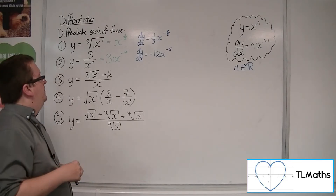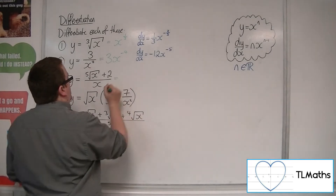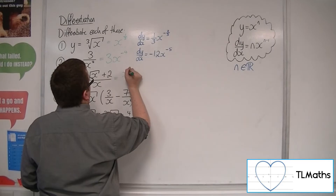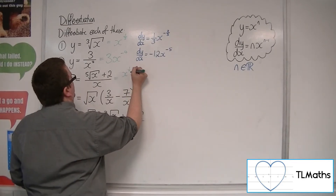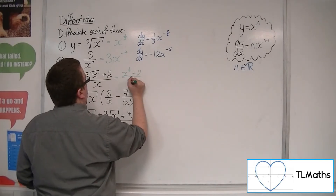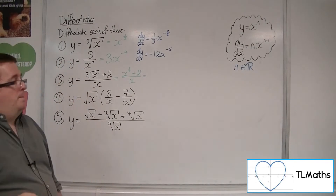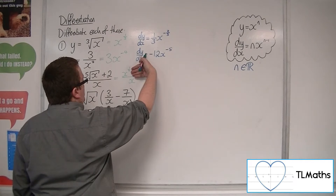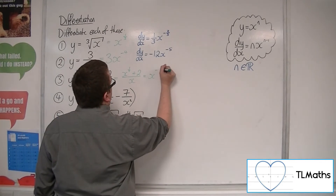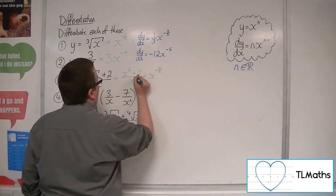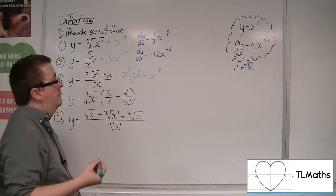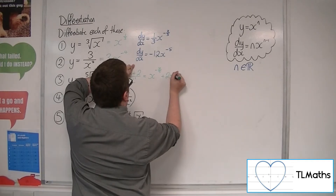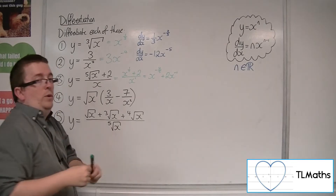Number three is not so obvious. First of all, we want to think of writing each of the terms in the fraction in index notation. So x to the one fifth represents the fifth root of x, plus two over x. I'm still not done though, because now I want to divide. x to the one fifth divided by x gives x to the minus four fifths, because that's one fifth take away one. Then two over x to the one is plus two x to the minus one. Now we can differentiate.